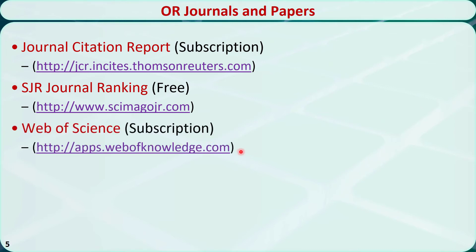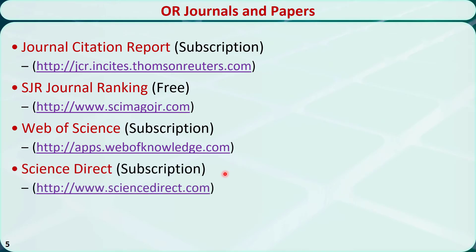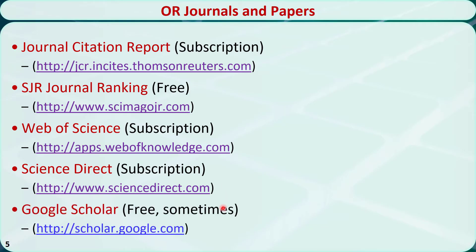In order to download full-text papers, you can use academic databases such as Web of Science and ScienceDirect, both of which require university access. You can also use Google or Google Scholar to find free copies of some papers. As a last resort, you can directly contact the authors of a paper you are interested in for a free copy. Based on my experience, most people are willing to share their work.